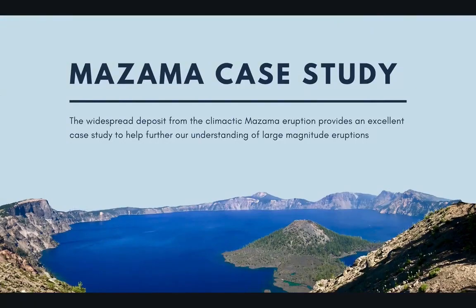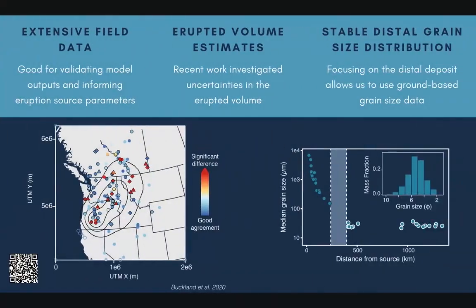This is one of the reasons that using the climatic eruption of Mount Mazama in modern-day Oregon is quite useful for studies of large eruptions, because of its widespread onland tephra deposit. This has meant that many authors, including myself, have been able to carry out extensive studies of the tephra deposit in order to constrain eruption source parameters such as the volume, the plume height, and also the grain size distribution.